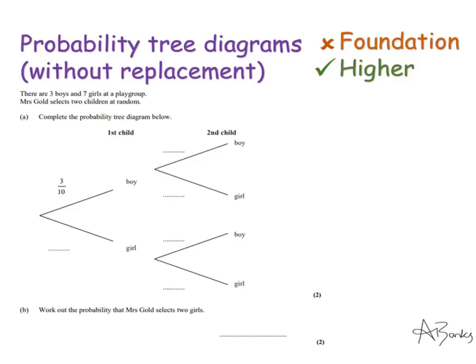Hi everyone and thanks for watching my online lesson on probability tree diagrams without replacement. These tree diagrams are considered more complicated because we don't replace whatever we take out on our first choice. For example, if I was talking about a bag of sweets, I'd pick out a first sweet and not replace it before picking the second. This is a higher tier only topic — it doesn't appear on foundation. Make sure you're a higher tier student when watching this video.